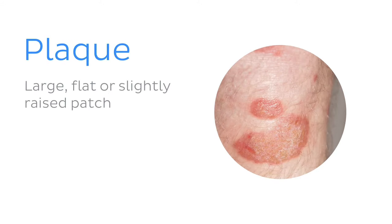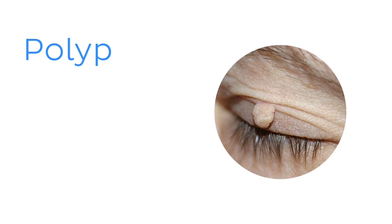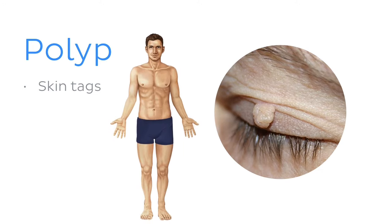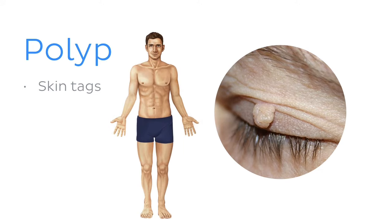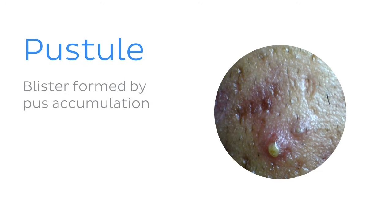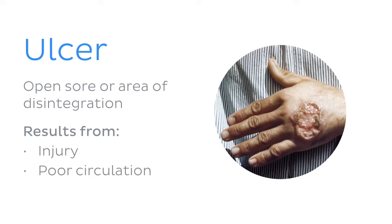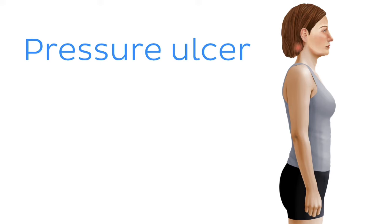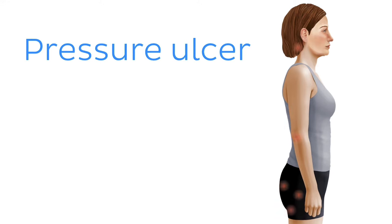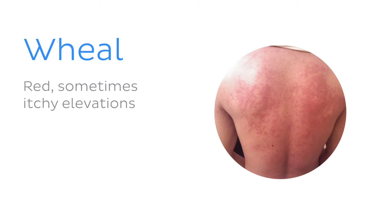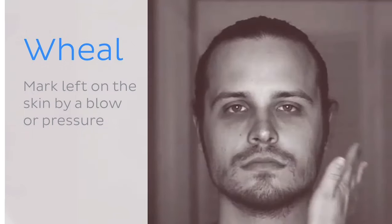A plaque describes a larger, flat or slightly raised patch on the skin greater than one centimeter in diameter, common in disorders like psoriasis. A polyp is a mushroom-type growth extending from the skin, commonly called a skin tag, often forming where skin creases or rubs together — like the neck, armpits, or groin. A pustule is a raised blister formed by pus accumulation, such as those seen in acne. An ulcer is an open sore resulting from injury, poor circulation, or pressure — pressure ulcers are necrotic lesions over bony projections. A wheal is a smooth, red, sometimes itchy elevation, such as hives, or the mark left by a blow.